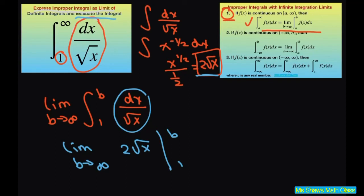So this is going to give you the limit as b approaches infinity of 2 square root of b minus 2 times the square root of 1, which is 2. So when you put a very large number in here, this is going to just get bigger and bigger and bigger.